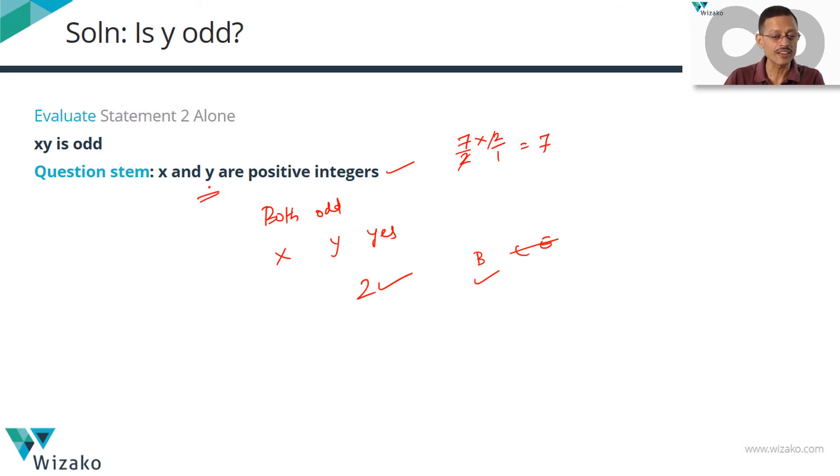We cannot say. So this information that x and y are positive integers is crucial to make statement 2 work. So always keep track of information that comes about these numbers, x, y or whatever it is from the question stem.